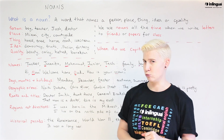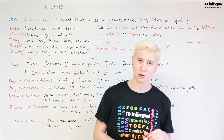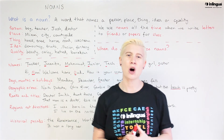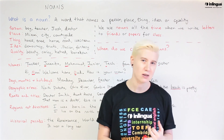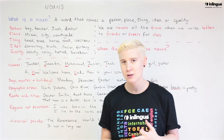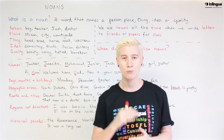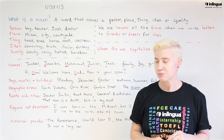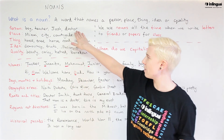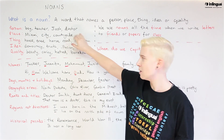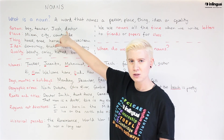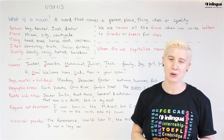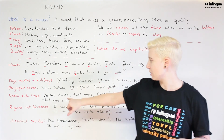Next up we have ranks and titles. Do you know what a rank is? Like in the army — private, ranger, sergeant — or in the police force. And titles like doctor. We looked at doctor already, in the person category. Does this need a capital? No. This is a general doctor. I am not using it in place of one person's name.